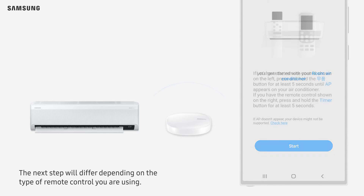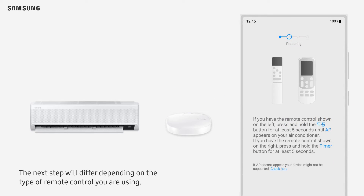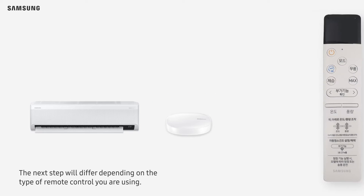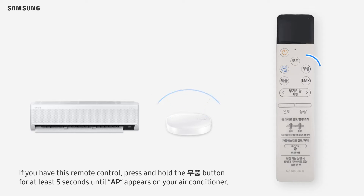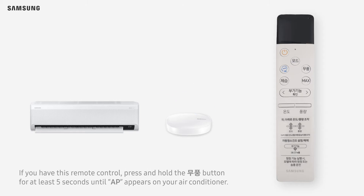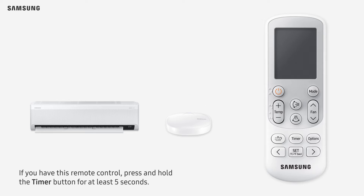The next step will differ depending on the type of remote control you are using. If you have this remote control, press and hold the Mupung button for at least 5 seconds until AP appears on your air conditioner. If you have this remote control, press and hold the Timer button for at least 5 seconds.